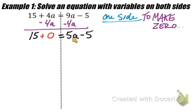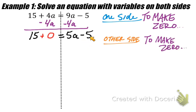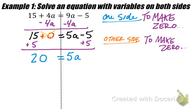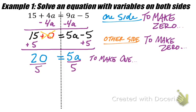Once we've decided the a is on the right side, we move the constant terms to the other side. We had 15 plus 0 equals 9a minus 4a, which gives us 5a, minus 5. The inverse operation of minus 5 is to add 5 to both sides, lining up the 5 with the 15. We get 20 equals 5a. Dividing both sides by 5, we're left with a equals 4.